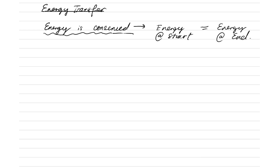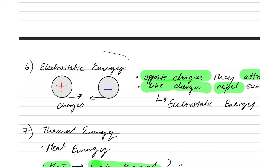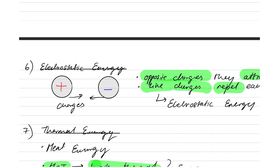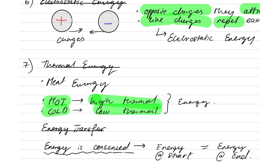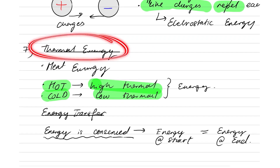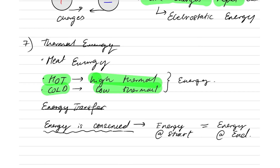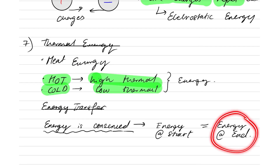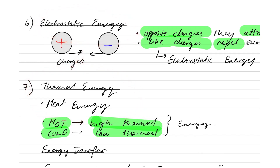This means that if you have some type of energy at the start — for example, if I have some electrostatic energy at the start — at the end of a process, it's going to be something else. It's going to be thermal energy, for example. The electrostatic energy at the start will have to equal the energy at the end. So the amount of electrostatic energy I have at the start will convert into the amount of thermal energy I have at the end.